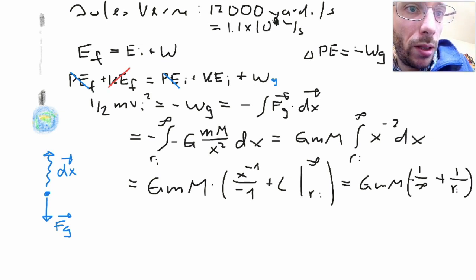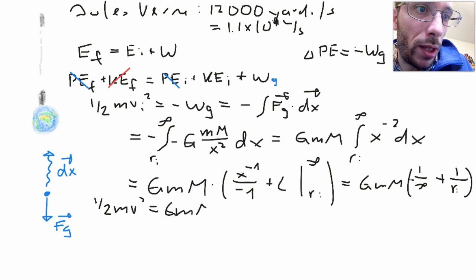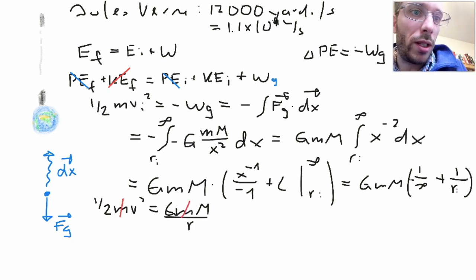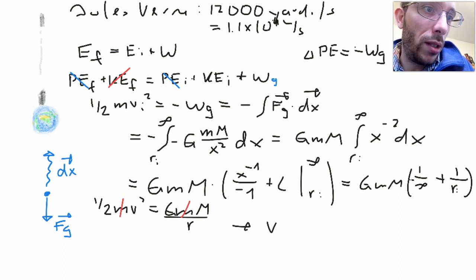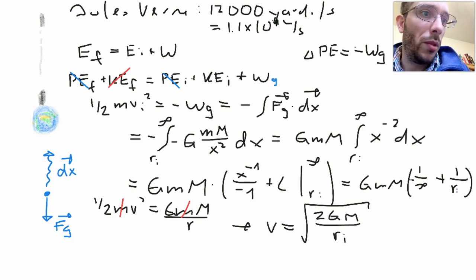Now let me rewrite this. So we had one half mv squared is equal to capital G mass of the projectile mass of the planet over r. So the mass of the projectile interestingly falls out, and what I get is v is equal to square root of 2 times capital G times the mass of the planet I'm leaving from, times the distance from the center of that planet I'm leaving for.